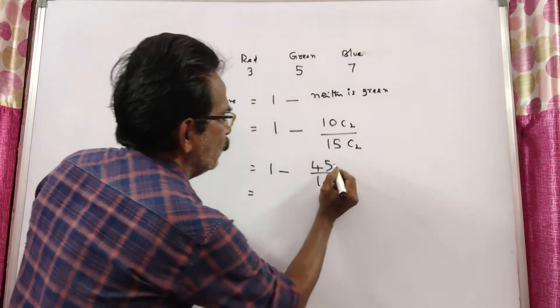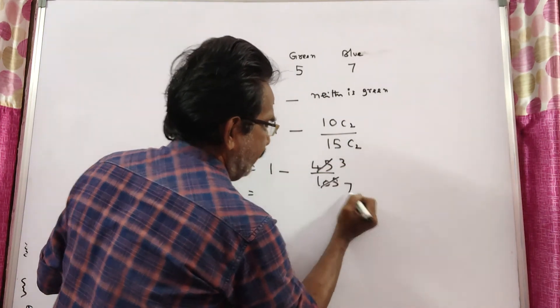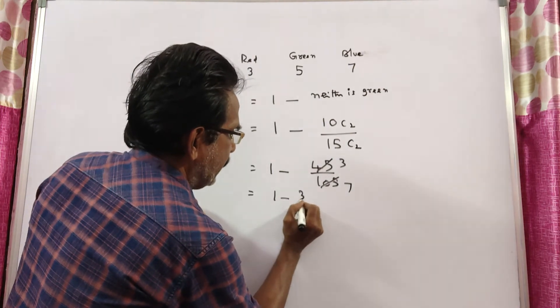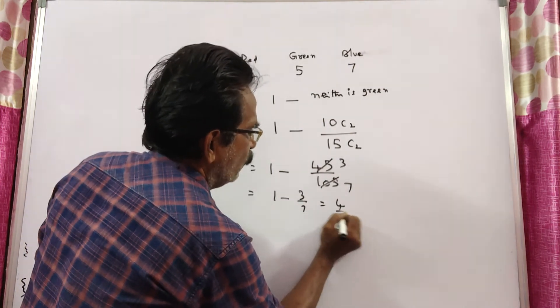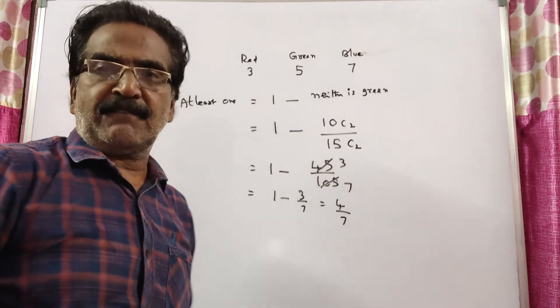This equals 1 minus 3 by 7, which equals 4 by 7. This is the required probability.